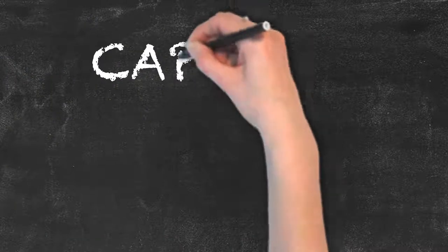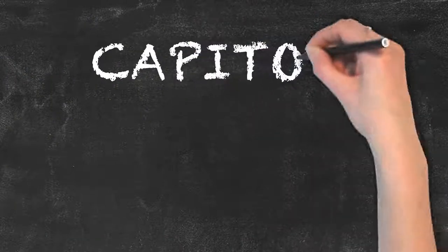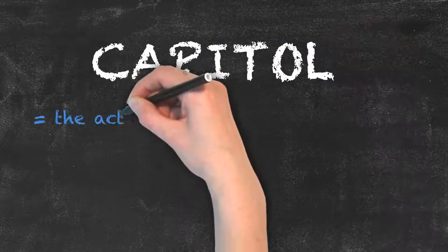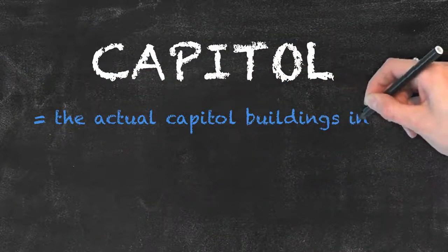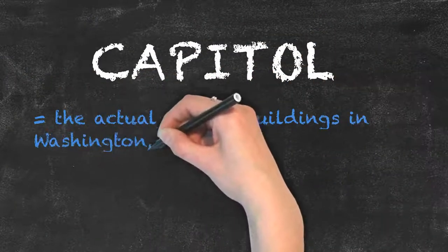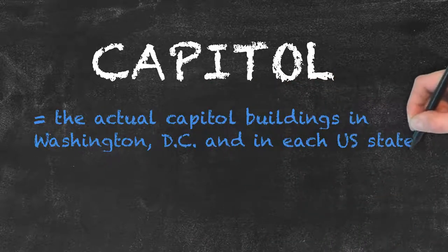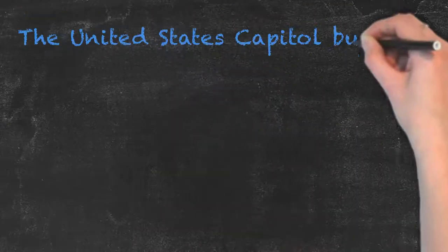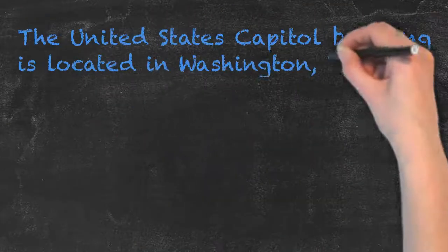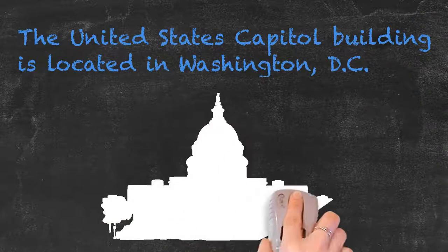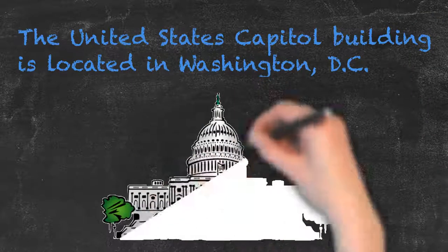'Capitol,' spelled with an O, on the other hand, refers to the actual capitol buildings in Washington, D.C. and in each U.S. state. The United States Capitol building is located in Washington, D.C.